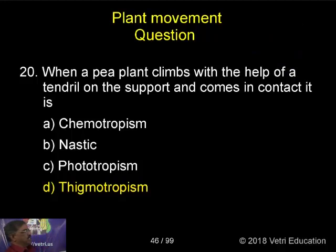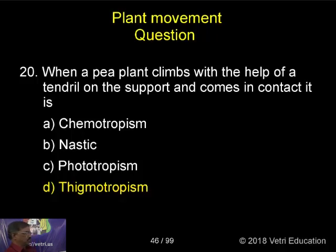When a pea plant climbs with the help of a tendril and the support comes in contact, is it chemotropism, nastic, phototropic, or thigmotropism?